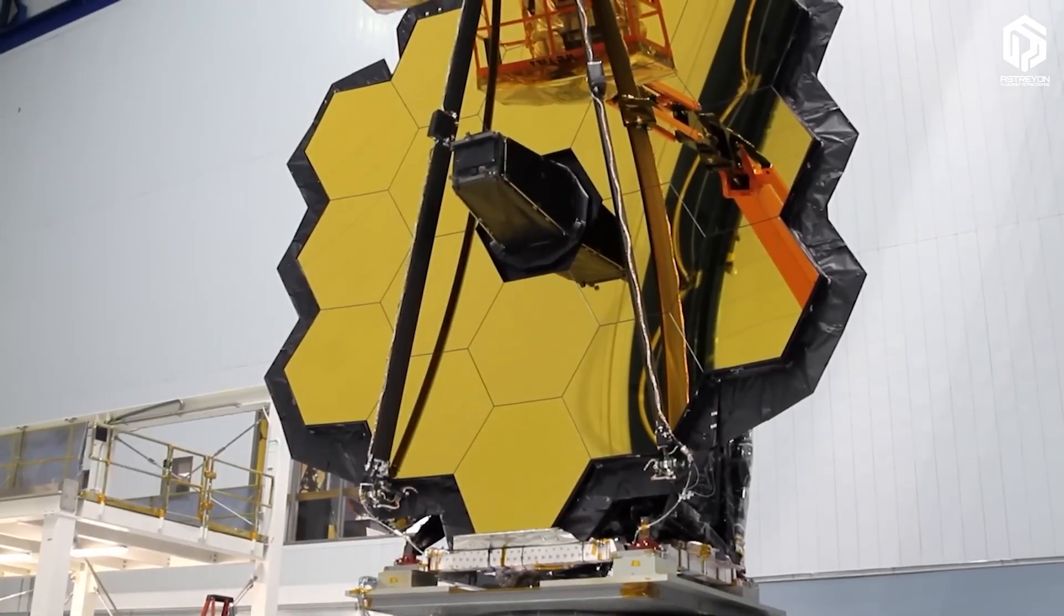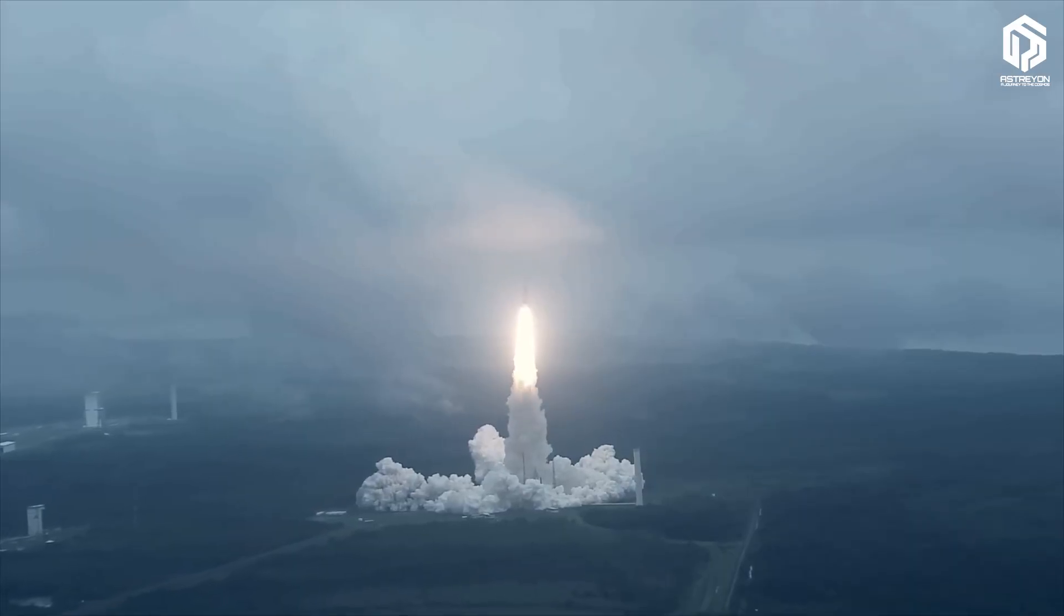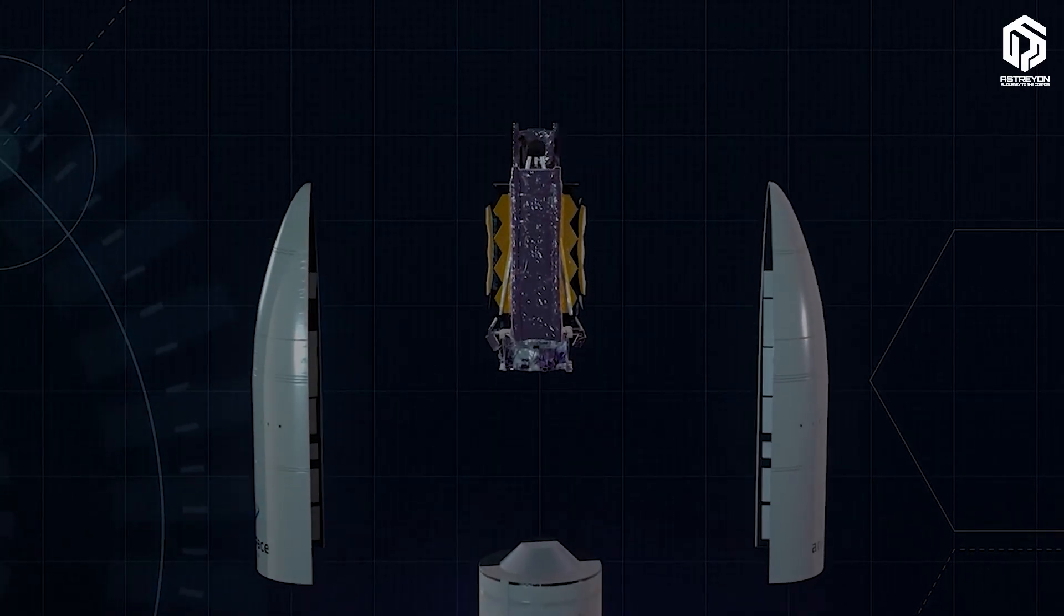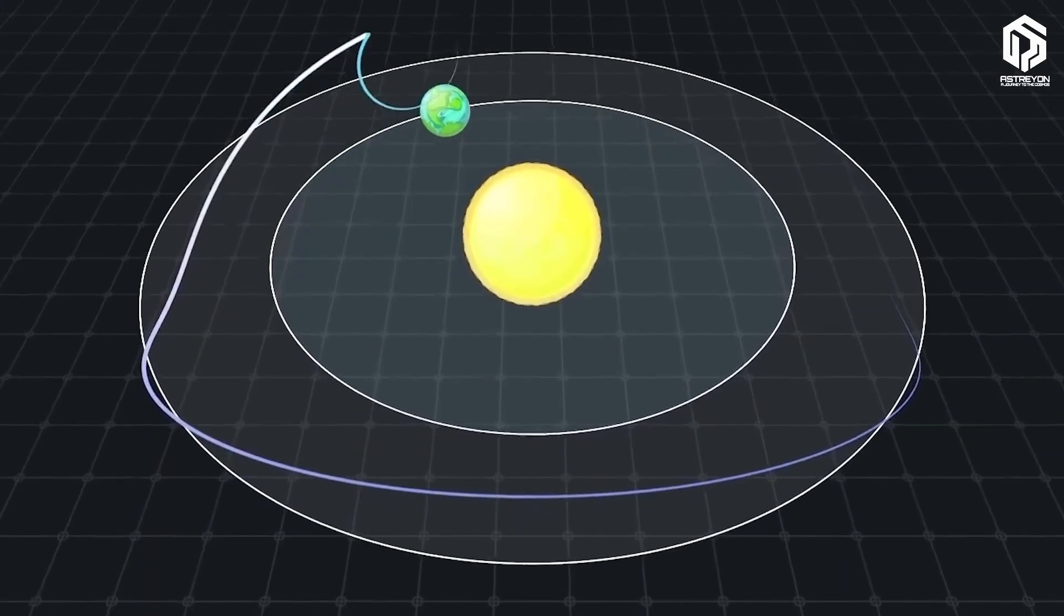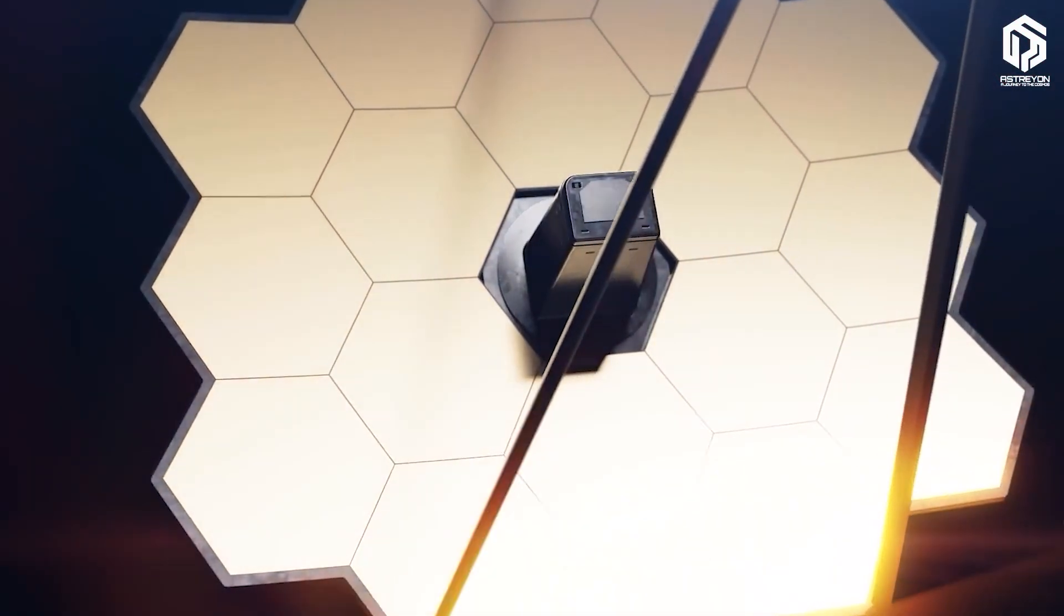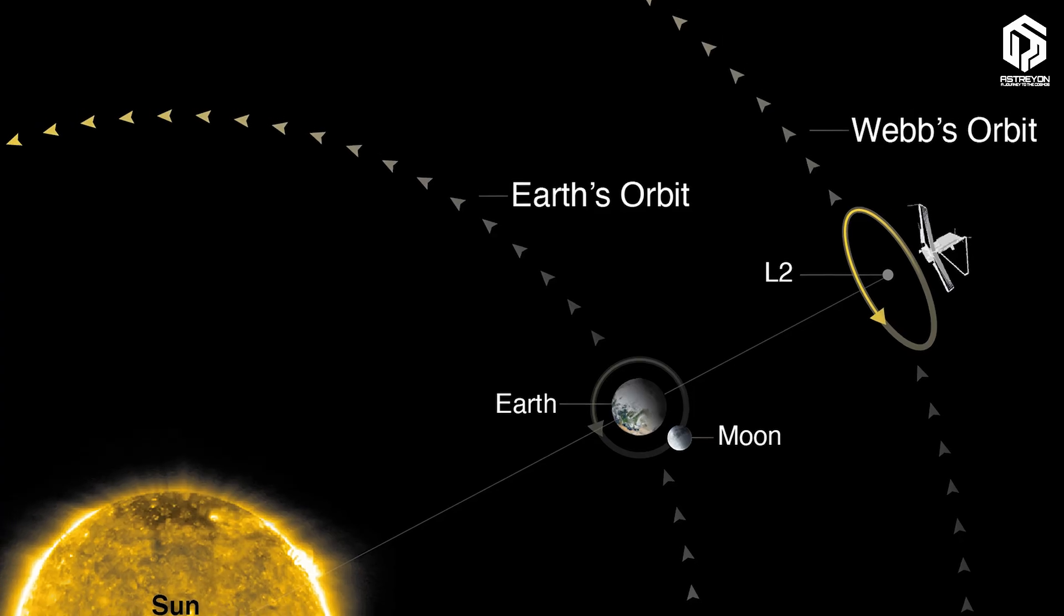The James Webb Space Telescope, launched in December 2021 and operational since July 2022, is positioned at Lagrange Point 2, a stable point in space about 1.5 million kilometers from Earth, to stay away from the heat of the Sun and Earth and capture faint lights without interference.